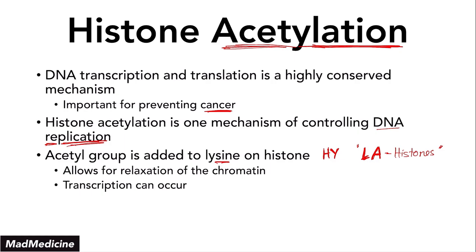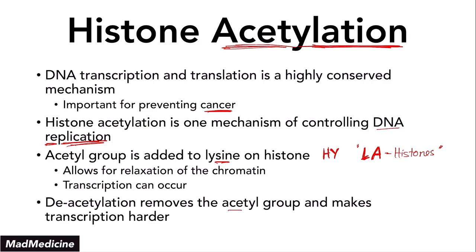So histone acetylation is essentially the opposite of DNA methylation. Now, what is deacetylation? In deacetylation, you're going to remove the acetyl group from the lysine on the histone, and that's going to undo what is happening and make transcription harder. Histones naturally like to stay in a very condensed state — they like to hang out with other histones, get closer and tighter — and the chromatin becomes closed, making it harder to transcribe DNA. When you add an acetyl group, it causes the histones to separate; but if you remove the acetyl group, they go back to the normal baseline. So deacetylation will make the histones get closer together and make transcription harder.